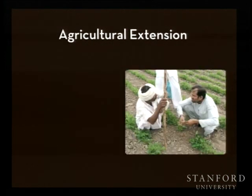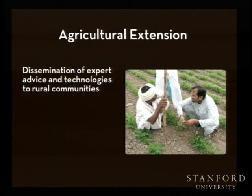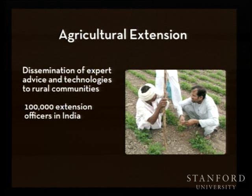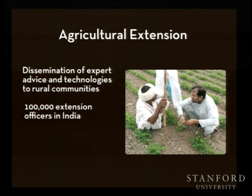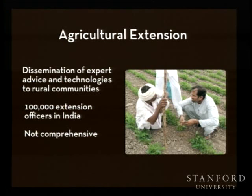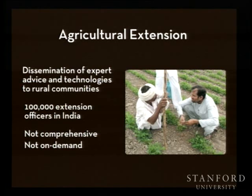Improving livelihoods of farmers partly lies in equipping them with relevant and timely agricultural information for good decision-making. Many governments, including the government of India, invest heavily in agricultural extension, which is basically adult education for farmers. It's a massive program in India, though it still struggles to reach everybody. A survey by the International Food Policy Research Institute found that only 6% of Indian farmers reported having interacted with an extension officer. This highlights two challenges: it's not comprehensive—an extension officer may not have specific knowledge for your particular problems—and it's not on demand, since a farmer often needs help right away.